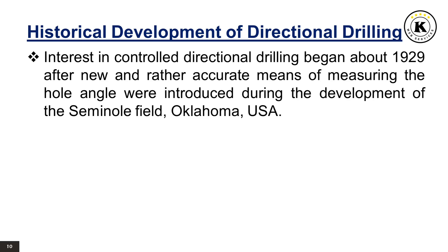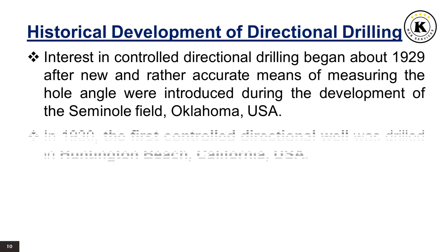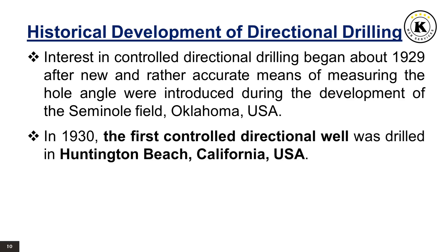Interest in controlled directional drilling began about 1929 after new and rather accurate means of measuring the hole angle were introduced during the development of the Seminole Field, Oklahoma, USA. In 1930, the first controlled directional well was drilled in Huntington Beach, California, USA.